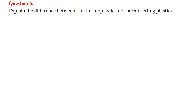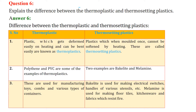Explain the difference between thermoplastic and thermosetting plastic. Thermosetting plastic, once set, cannot be unset — just remember that. Thermoplastics can be reformed if you heat them and they can be bent easily. Thermosetting plastics, on the other hand, once molded, cannot be softened by heating.